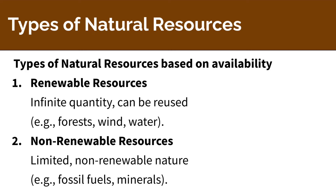The types of natural resources are mainly two types based on availability. Availability is the criteria. One is renewable resource and non-renewable resource.